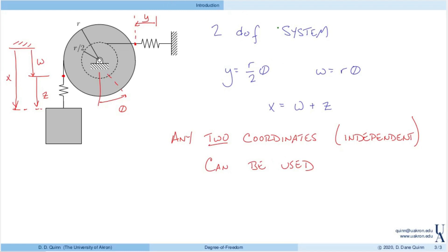We'll note that y, w, and theta are dependent, so I could only use one of those as well as one of either x or z. For example, a good set of coordinates might be theta and x. But also a good set of coordinates could be y and z. Those are also independent. So when we're modeling systems, particularly as we come to multi-degree of freedom systems, we have a lot of flexibility about how we choose the coordinates to describe our system.